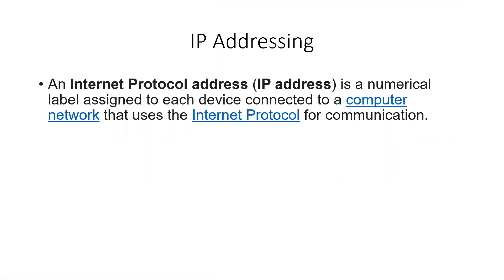We'll start with a brief definition for IP addressing. So IP addressing, according to Wikipedia, is a numeric label assigned to each device connected to a computer network that uses the internet protocol for communication. I would just say IP addresses represent the names given to devices in order for them to be identified and communicated to.